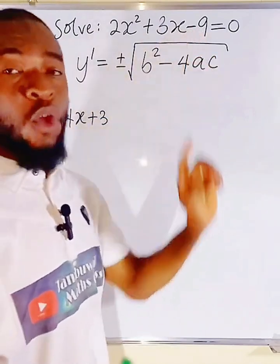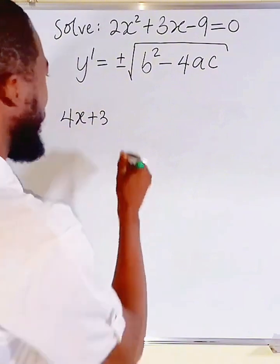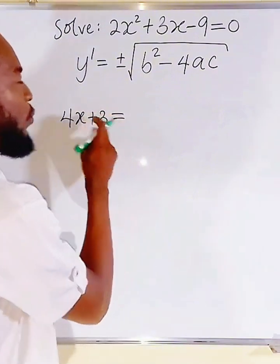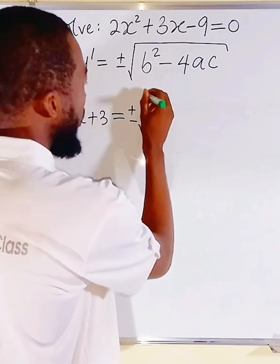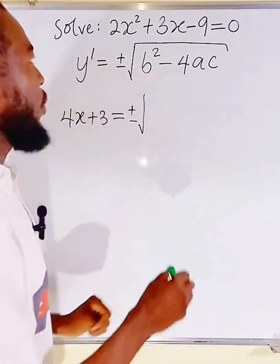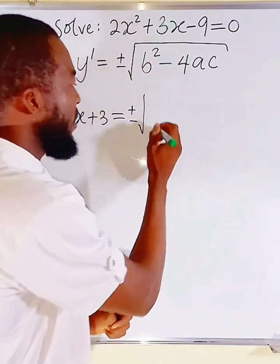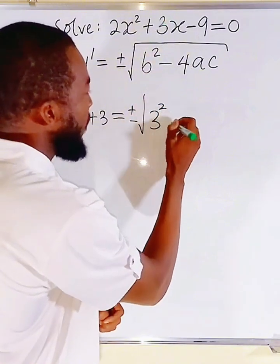And the derivative of constant is 0, so we forget about it. This is equal to, we are done with y prime, plus or minus the square root of b squared. You know, b is the coefficient of x, which is 3. So, we have 3 squared.